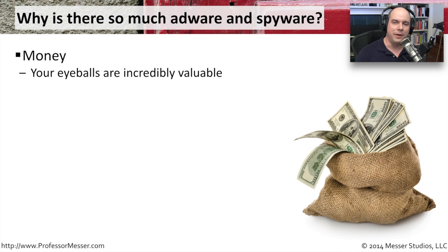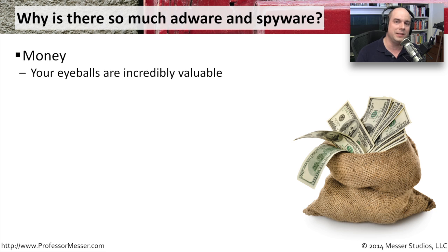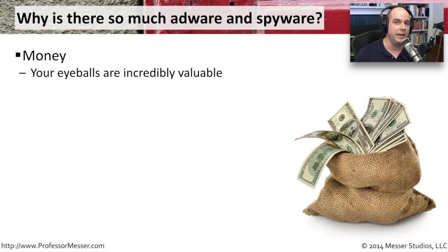There is a lot of adware and spyware out there, and there are three big reasons why. The first reason is money. Your eyeballs are very valuable, and your buying habits are very valuable. If advertisements can be placed in front of you, a third party pays to present those ads. So if I infect a million machines and present a million advertisements to people, that's big money. By embedding adware onto your computer, it may not be legal, but third parties are making money off your eyeballs.